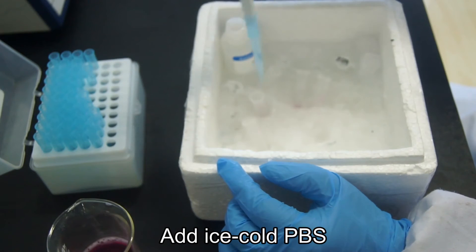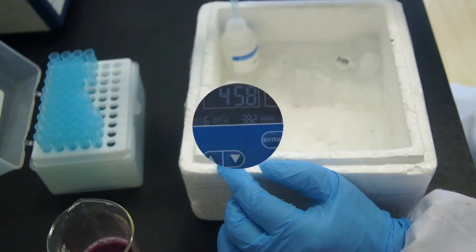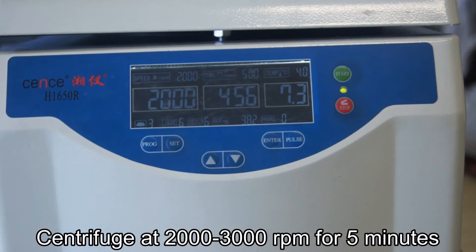Add ice-cold PBS to wash the cells. Centrifuge at 2,000 to 3,000 RPM for 5 minutes at 4 degrees centigrade.